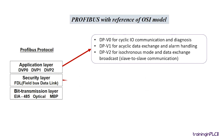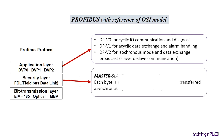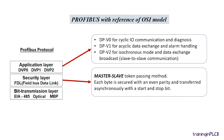The next security layer is known as the FDL, Field Bus Data Link, which handles the data transmission between the master-to-master devices and master-to-slave devices. It adopts the token passing technique and it handles both data security and error detection.